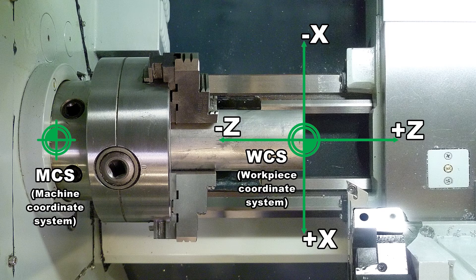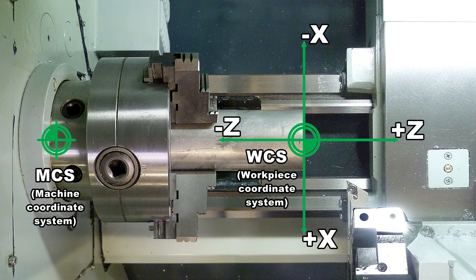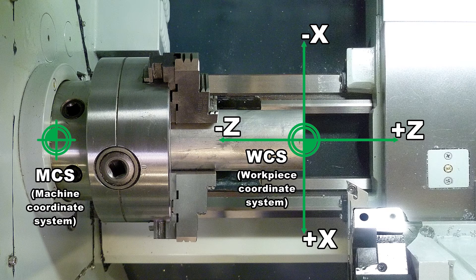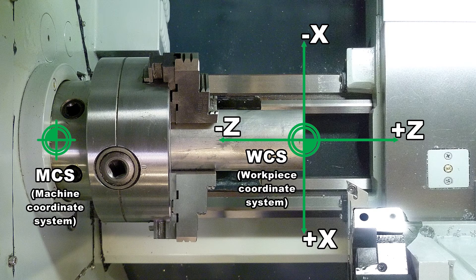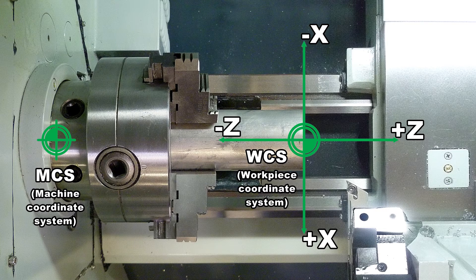On the front face of the workpiece will be the workpiece zero point. This is also the origin of the workpiece coordinate system in the X and Z axis used in the program. The workpiece zero point will be measured later in the video.